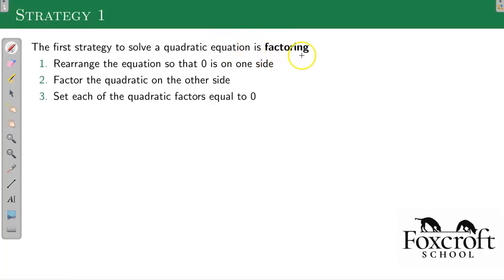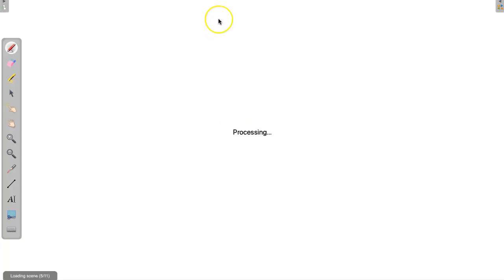Strategy one is factoring. I'm going to rearrange the equation so zero is on one side. This is really important because we're using the zero product property. Then factor the quadratic. The reason we factor is because we can set each factor equal to zero and split it up to where factor one equals zero or factor two equals zero. Then you get two smaller equations that are a lot simpler to solve.